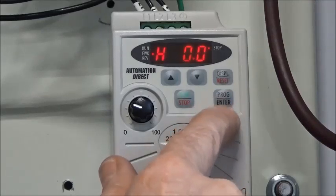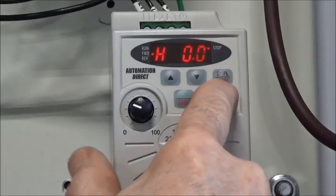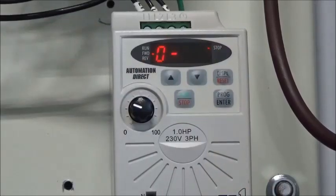So the thing you do is hit the program enter button right here. And a zero immediately pops up. That's parameter group zero.